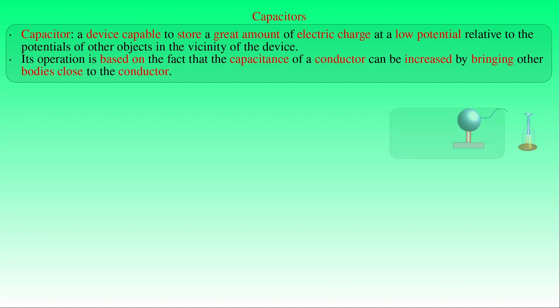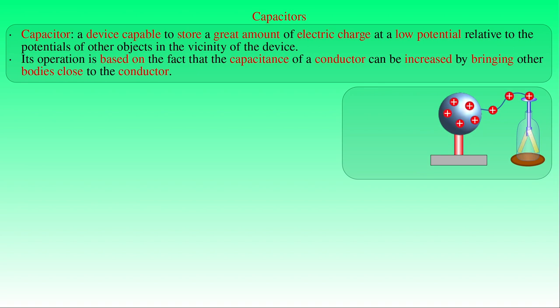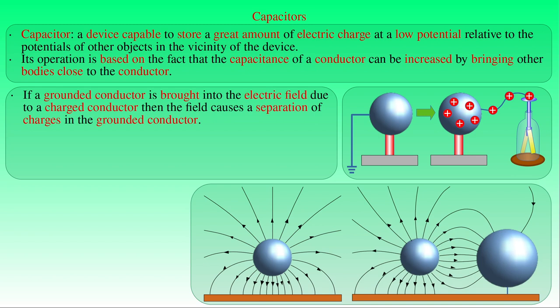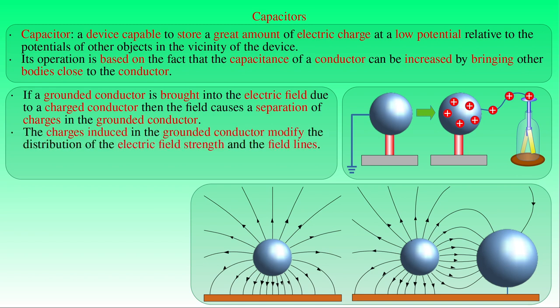For example, let us bring a metallic body into contact with the top plate of an electroscope and charge the system formed by the conductor and the electroscope. The gold leaves of the electroscope will spread apart indicating the presence of electric charge. As we bring another grounded metallic body near the system, the gold leaves will decrease with the decreasing distance between the system and the grounded conductor. We can interpret this phenomenon by examining the distribution of the electric field between a charged conductor and the ground. If a grounded conductor is brought into the electric field due to the charged conductor, the field causes a separation of charges in the grounded conductor. The charges induced in the grounded conductor modify the distribution of the electric field strength around the charged conductor, that is, the distribution of the field lines emanating from the conductor.